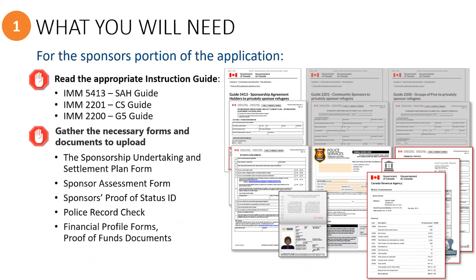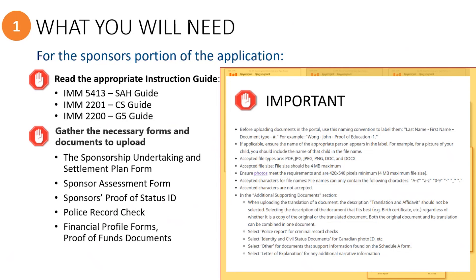Proof of funds documents are also required and must be uploaded by groups of five, community sponsorship groups, and SAWs who are working under Plans B and C. SAWs under Plan A should keep their proof documents on file in case the application undergoes a case review. When reading the guide, you will see important information about the file requirements for uploading documents into the PR Portal. In the next segment, we will take a quick look at how to prepare the files for uploading before moving on to explain how invited group members will access the PR Portal.